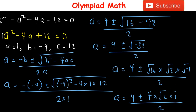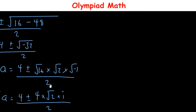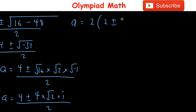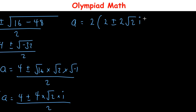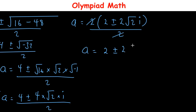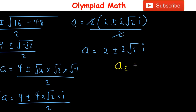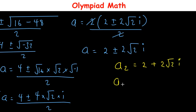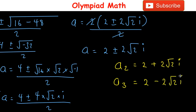Factoring out 2 from the numerator: a = 2(2 ± 2√2·i) / 2, so a = 2 ± 2√2·i. Thus a₂ = 2 + 2√2·i and a₃ = 2 - 2√2·i.